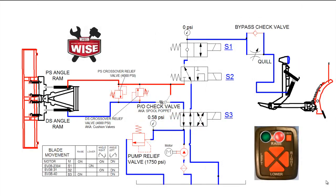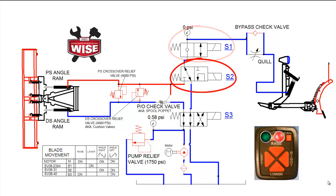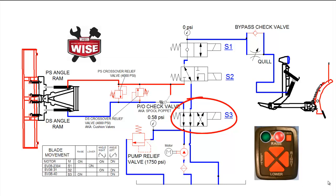There are many different hydraulic components that make up the Straight Blade Plow Hydraulic Circuit. There are three solenoid cartridge valves, labeled S1, S2, and S3.